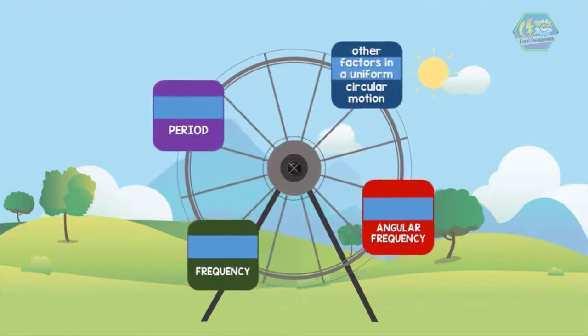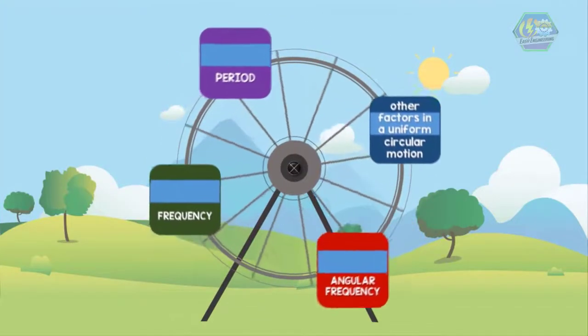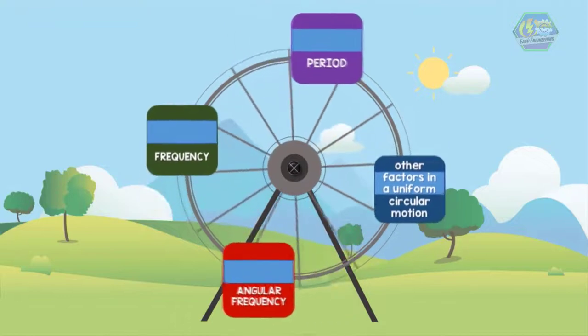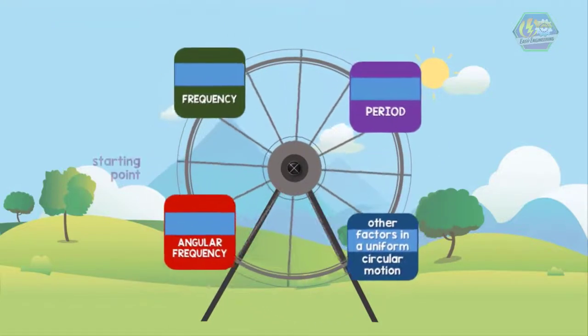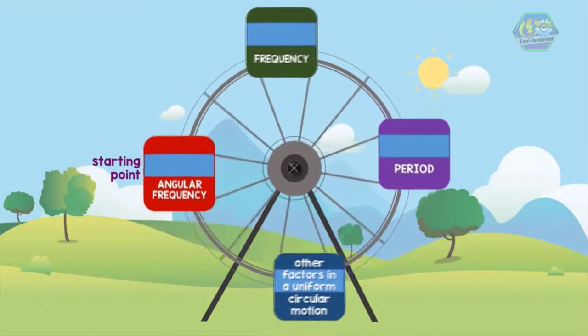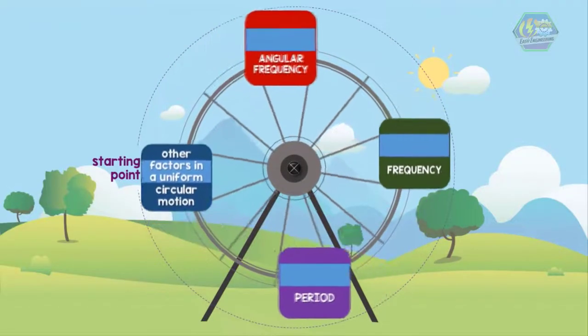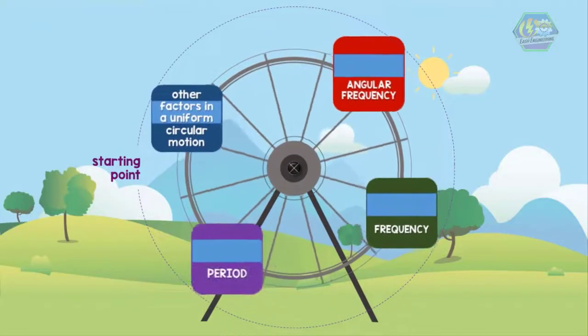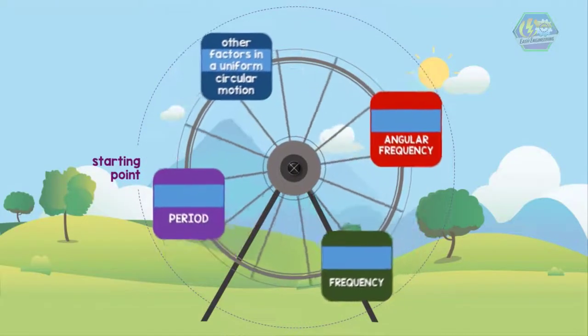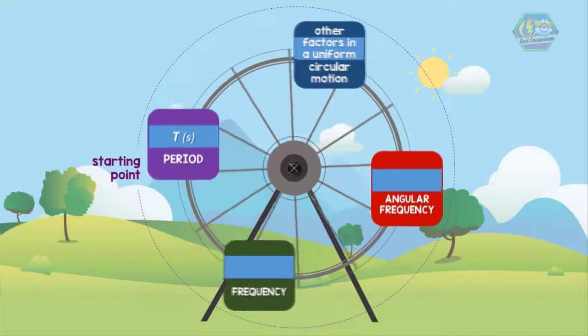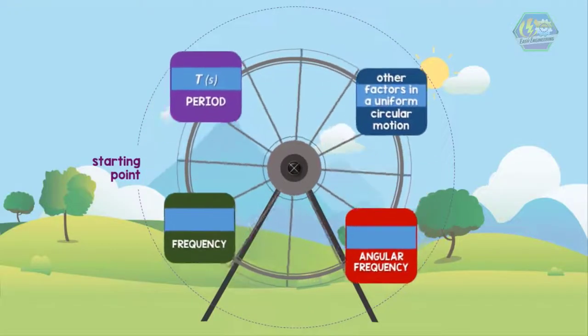When an object with constant acceleration is moving around a circle, it will take a certain amount of time to return to its starting point. The starting point that I am referring to is just some point along the circular path. We call the certain amount of time as the period of the motion and we use the variable T to represent it. The unit for the period of time is seconds.